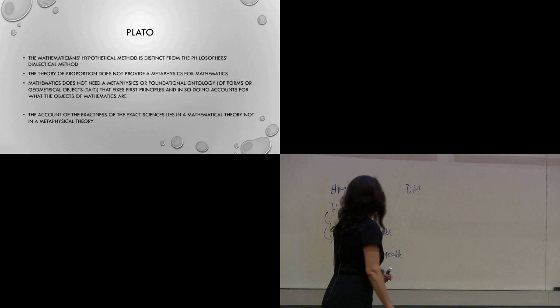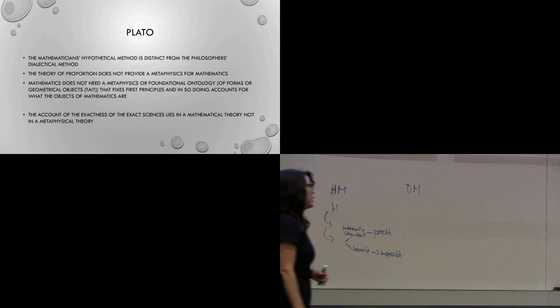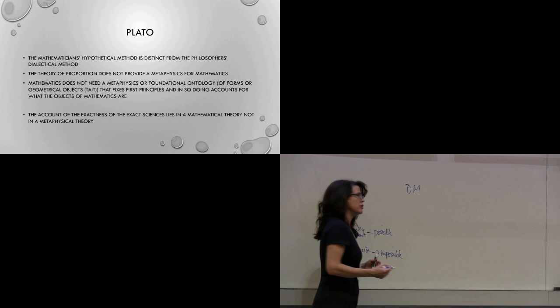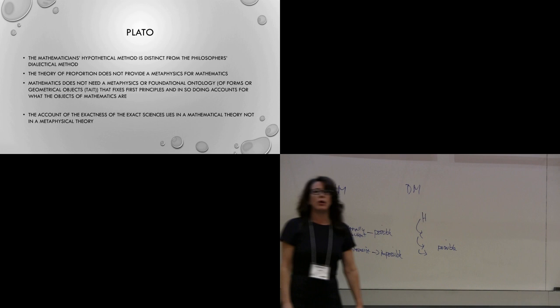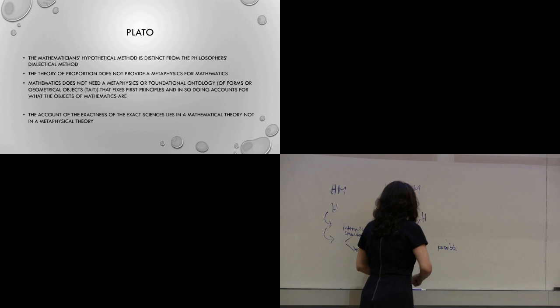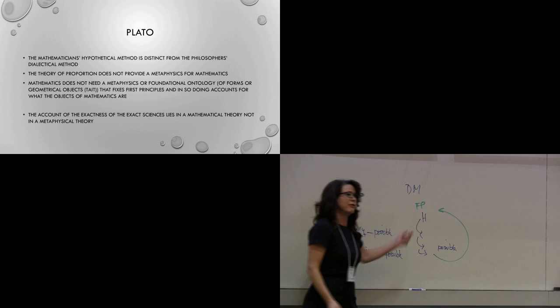The philosopher's method is different from the mathematician's in the sense that you're not reasoning downward from a hypothesis; what you're supposed to do is reason upwards towards a first principle. The mathematician's method is part of this, so you get something that's possible, and then you say, okay, what are the conditions for that possibility?